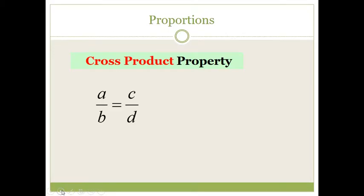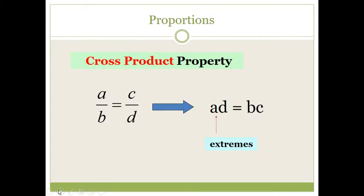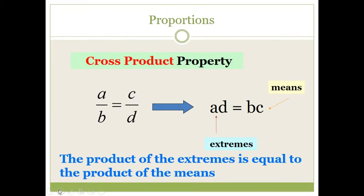Let's talk about the cross product property. The cross product property states that when you have a proportion A over B equals C over D, the product of the means is equal to the product of the extremes. So A times D is equal to B times C. Remember, A times D are the extremes and B and C are the means — the cross products are equal.